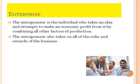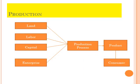Now we'll put all four factors into a diagram. In this diagram, land, labor, capital and enterprise are the inputs to the production process. The production process takes all these inputs and converts them into a final product, which is then consumed by consumers.